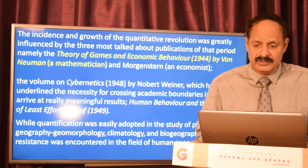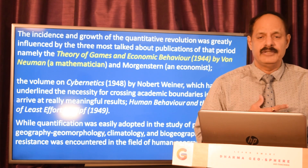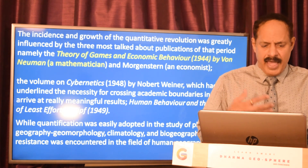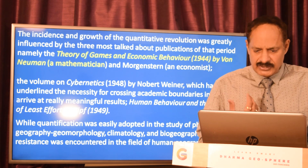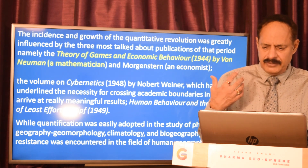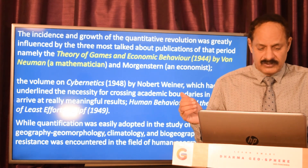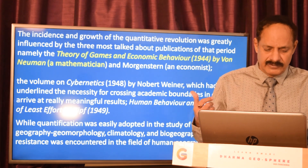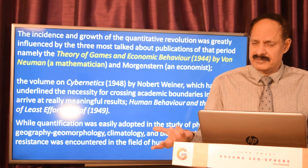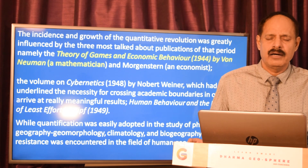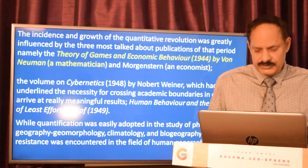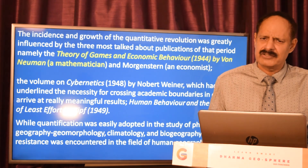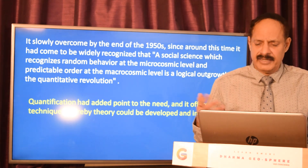The growth of the quantitative revolution was greatly influenced by three major works: The Theory of Games and Economic Behavior by Von Neumann, Cybernetics by Norbert Wiener, and Human Behavior and the Principle of Least Effort by Zipf. While quantification was easily adopted in physical geography and geomorphology, there was considerable resistance from human geography, which felt that quantification was dehumanizing the human part of geography.